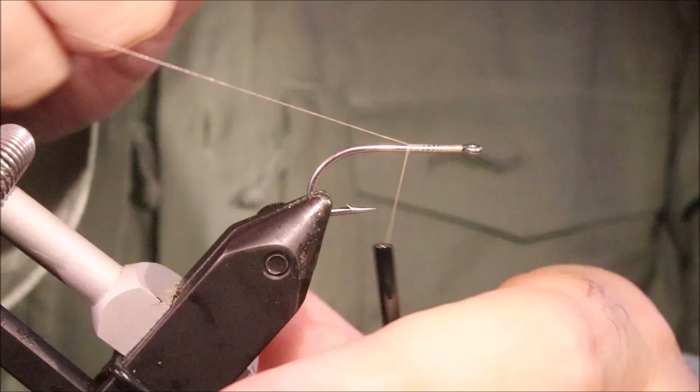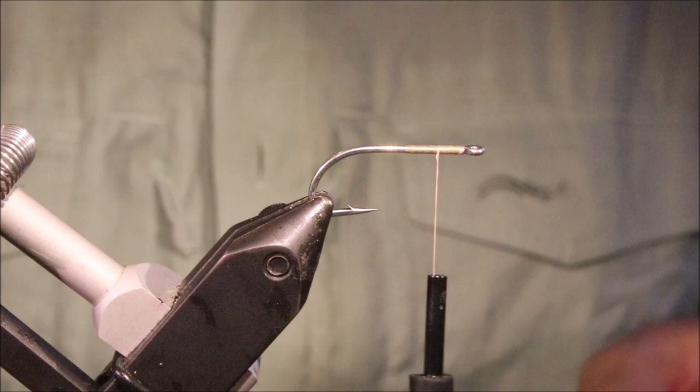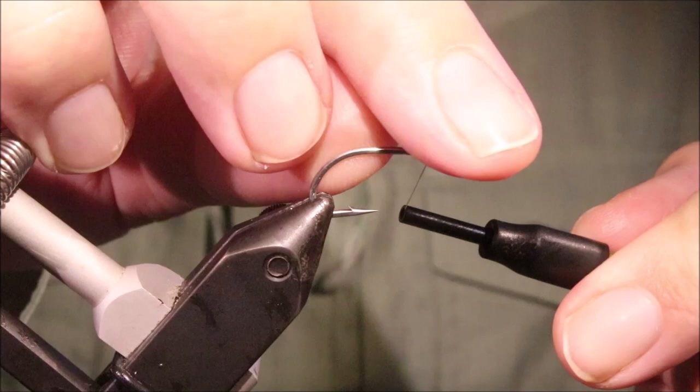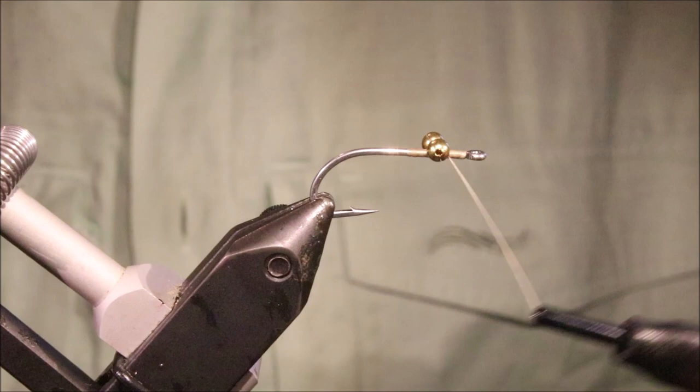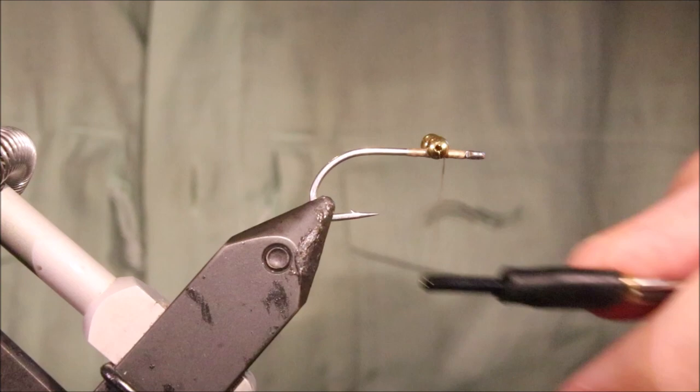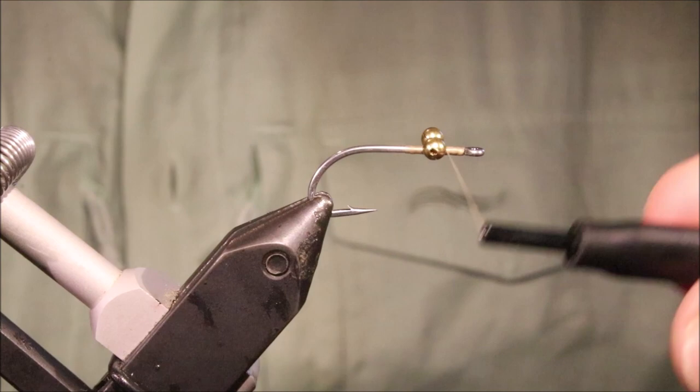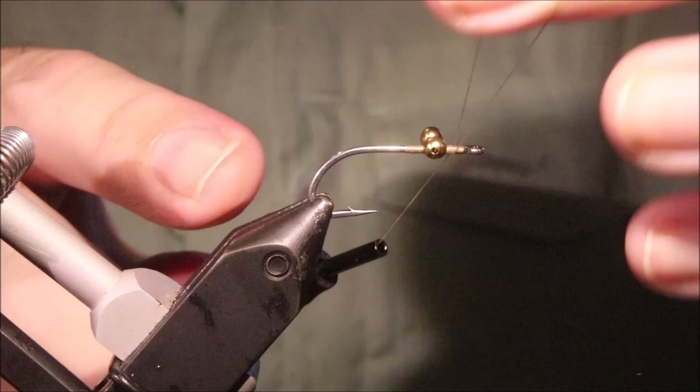Size 6's maybe 4's for these. You don't need to be making them very big. I'm just starting some tan, it's just Uni 6-0. I'm going to cover about half the shank and then at the quarter mark, I'm going to come in and get a set of eyes. These are just medium bead chain. And if you want a lighter fly you can actually just use mono eyes. But the bead chain, I like the bead usually. Medium and even large.